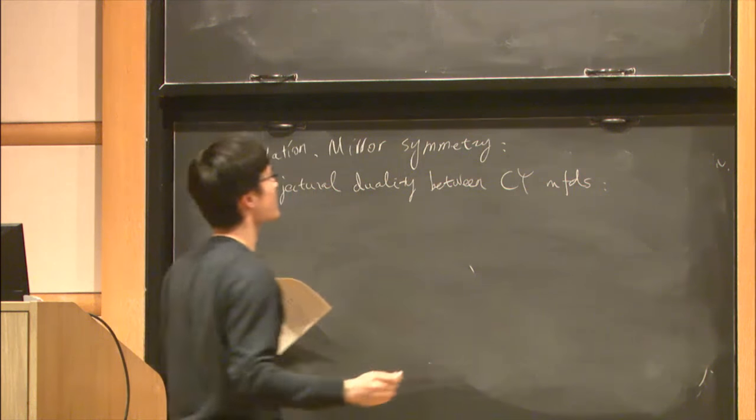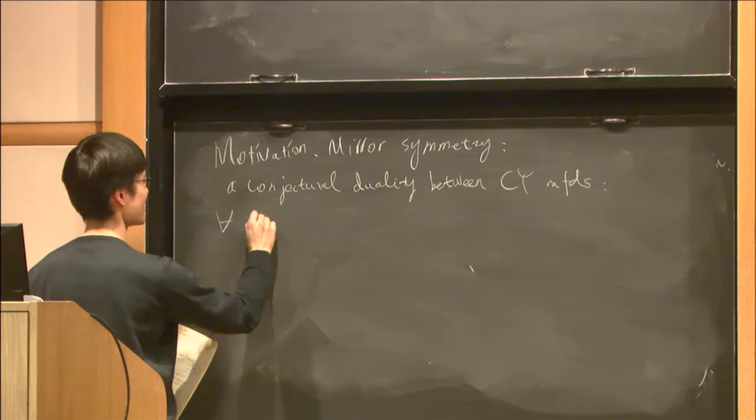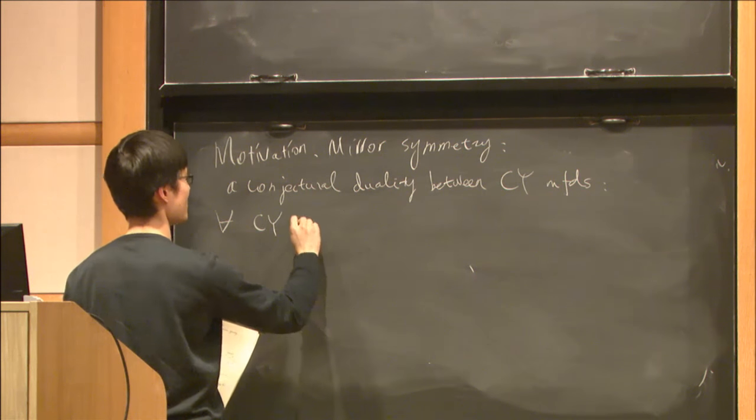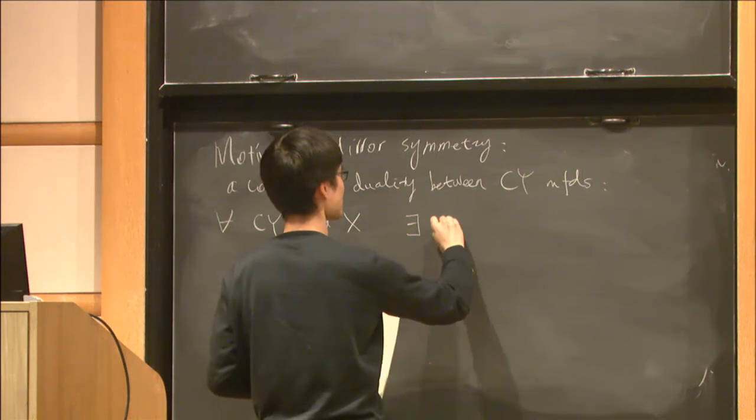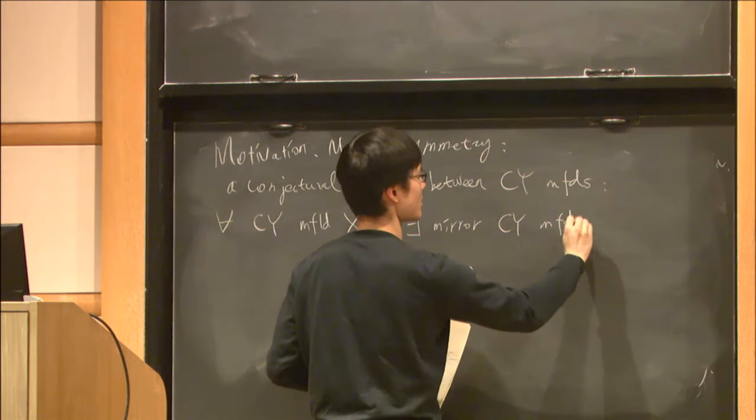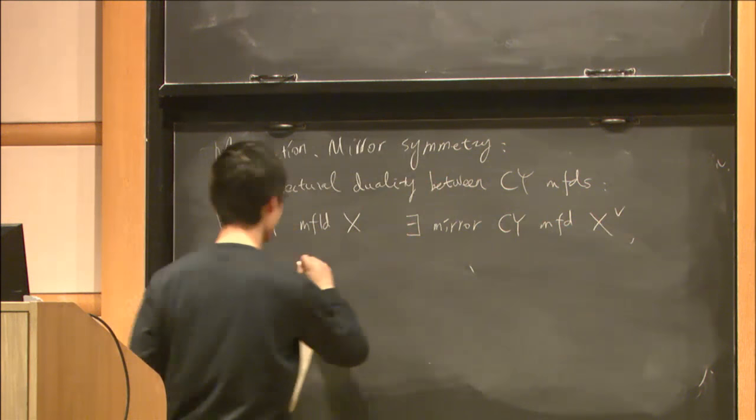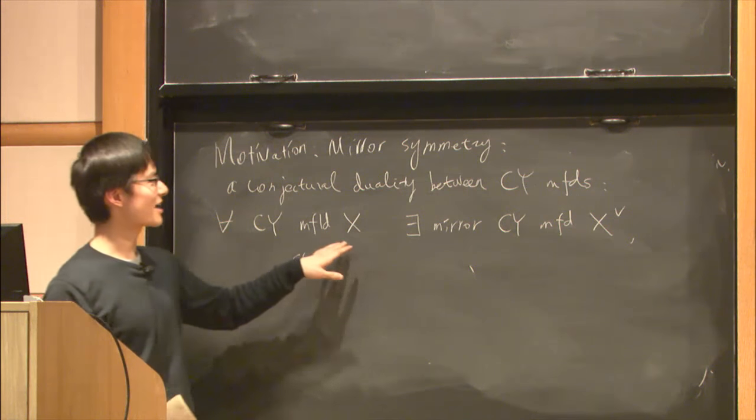Roughly, it says that for any Calabi-Yau manifold X, there exists a mirror Calabi-Yau manifold X-check such that X and X-check are related by lots of geometric relations.